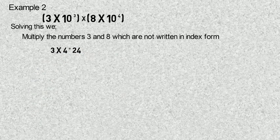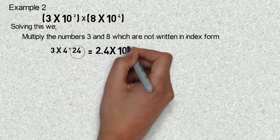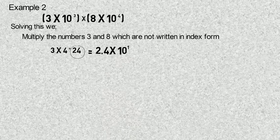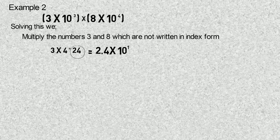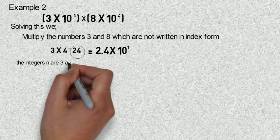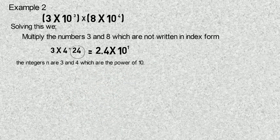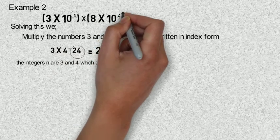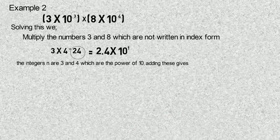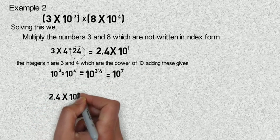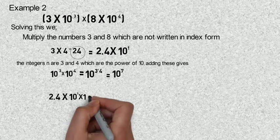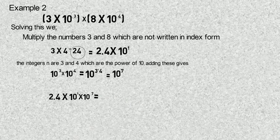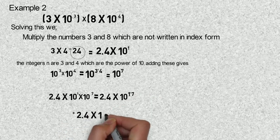Twenty-four is not in standard form, so we convert it, which gives us two point four times ten raised to power one. We shift the decimal point from the front of four to the front of two, moving from right to left one place, making our integer one. This has produced a new integer. We then add the given integers three and four to get seven, giving us two point four times ten raised to power one, times ten raised to power seven, which equals two point four times ten raised to power eight.